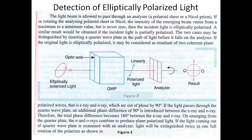In the next part of the lecture, we will see how elliptically polarized light can be detected. In this diagram, we use a quarter wave plate and an analyzer to check whether the polarized light is elliptically polarized. When the elliptically polarized light is allowed to pass through an analyzer — which is a Nicol prism — the intensity varies between a maximum and a minimum value, but it is never zero. Then the incident light can be taken as elliptically polarized.